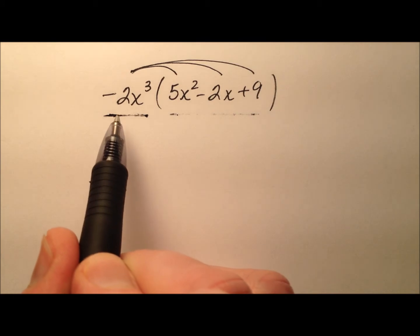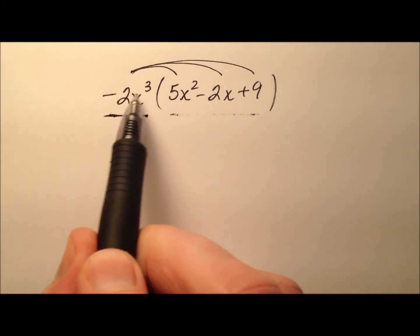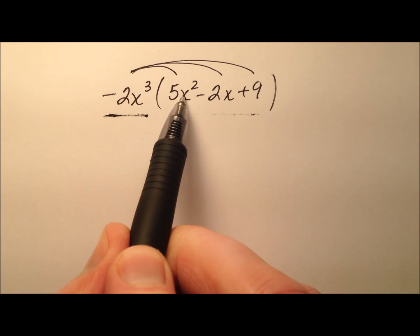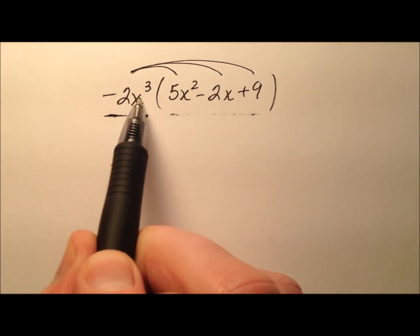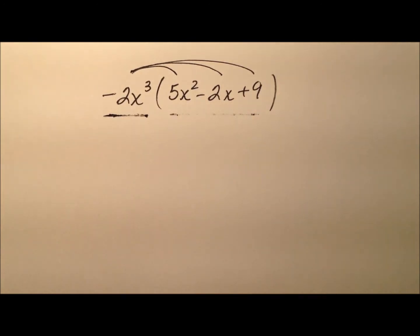When we are multiplying terms, we'll first multiply their coefficients. Then, since all the variables are the same—they're all x's—when we're multiplying, we're just going to add these exponents.